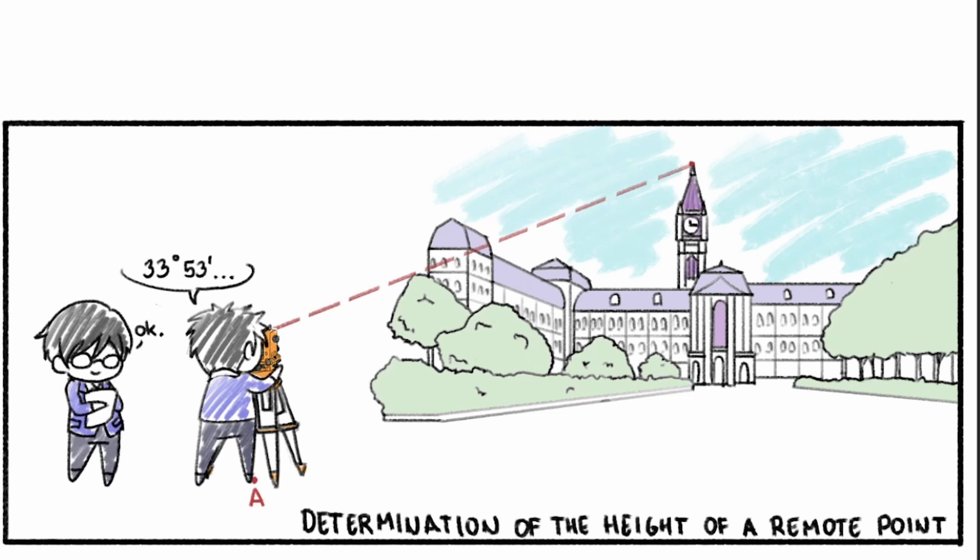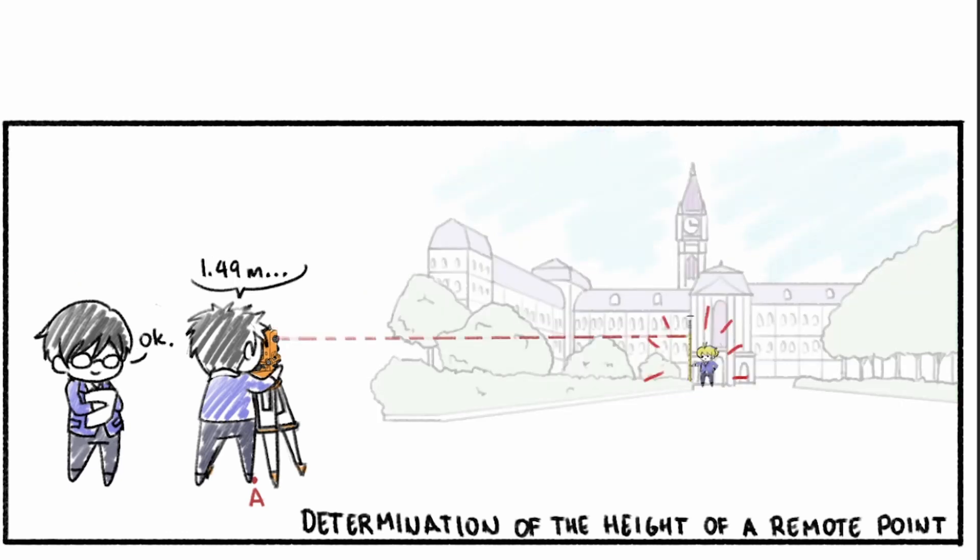Afterwards, release the vertical clamp, then rotate your telescope back to horizontal level. This means that the vertical reading should be 0. Once the reading is at 0, lock the vertical clamp again.